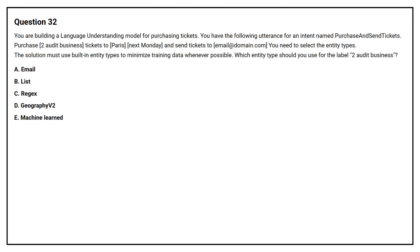Question No. 32. You are building a language understanding model for purchasing tickets. You have the following utterance for an intent named 'purchase and send tickets': 'Purchase two audit business tickets to Paris next Monday and send tickets to email@domain.com.' You need to select the entity types. The solution must use built-in entity types to minimize training data whenever possible. Which entity type should you use for the label 'two audit business'?